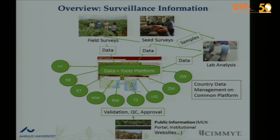The MLN Toolbox allows you to analyze your data further — you can generate surveillance data in tabular form or publish a map, depending on how you want to represent the results. Once the data is analyzed, it can be published and made available to the public through the MLN web portal. The MLN Toolbox is accessible to the MLN web portal, so once maps and data are published, they are available for public consumption at mln.cmit.org.